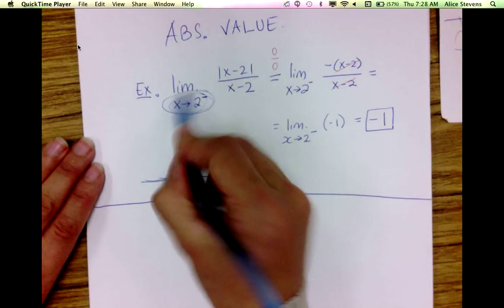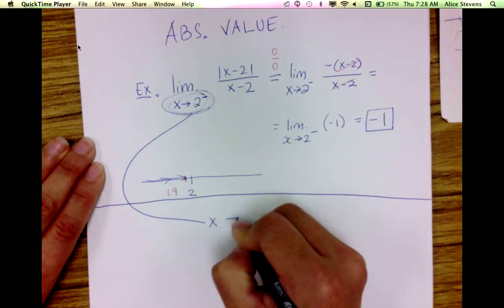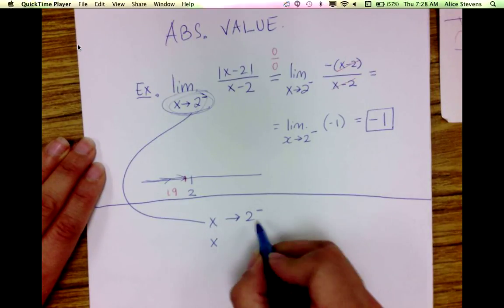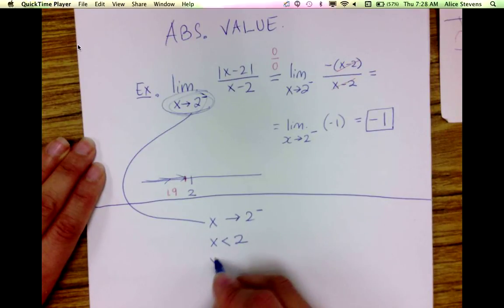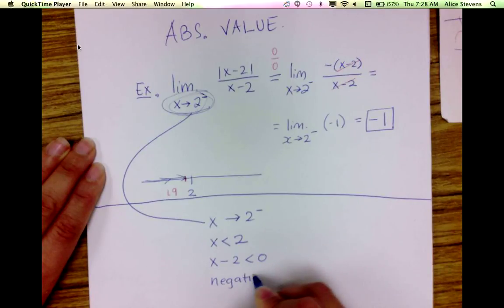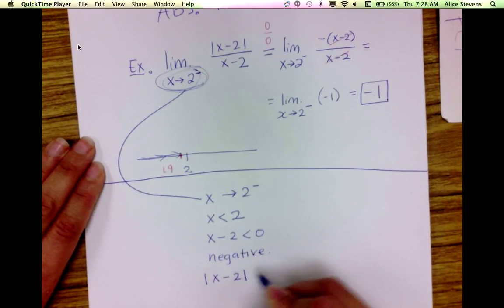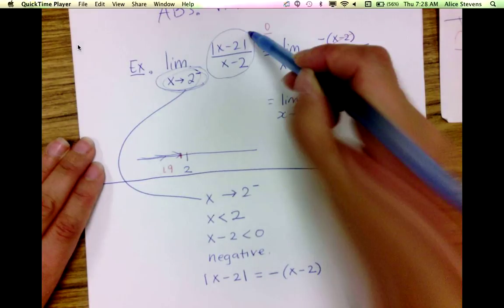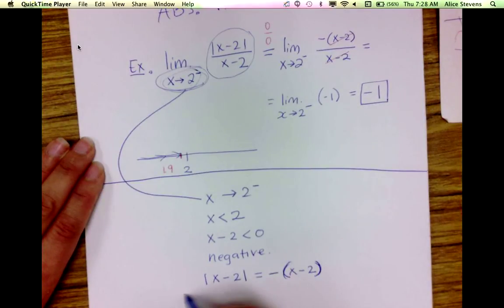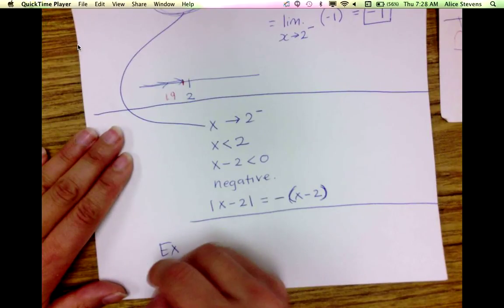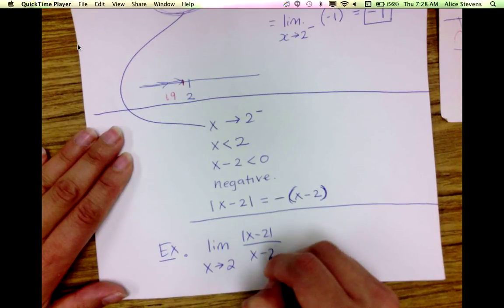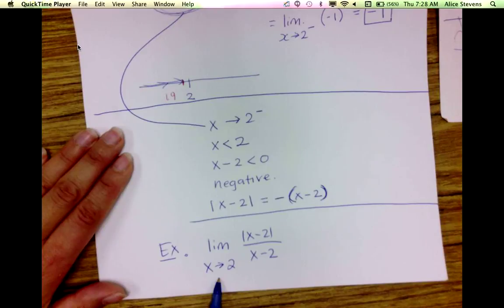To recap: the idea is that if we're approaching 2 from the left, then x is less than 2, which means x minus 2 is less than 0. So the absolute value of (x minus 2) equals the opposite of (x minus 2), allowing us to rewrite the expression without absolute value symbols. If you were to compute the two-sided limit, you would need to look at what happens as we approach 2 from the left and as we approach 2 from the right.